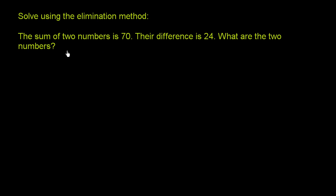Solve using the elimination method. They tell us the sum of two numbers is 70. Their difference is 24. What are the two numbers?